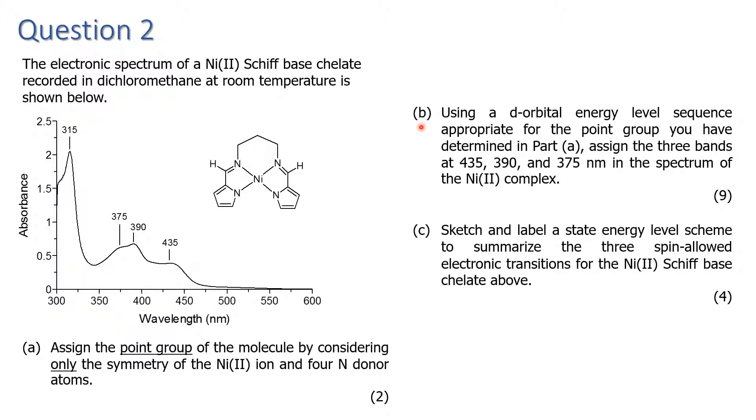Part B says use a d orbital energy level sequence which is appropriate for the point group and determine the necessary transitions assignments for the three bands. Part C of the problem says sketch and label a state energy level scheme to summarize the three spin allowed electronic transitions.